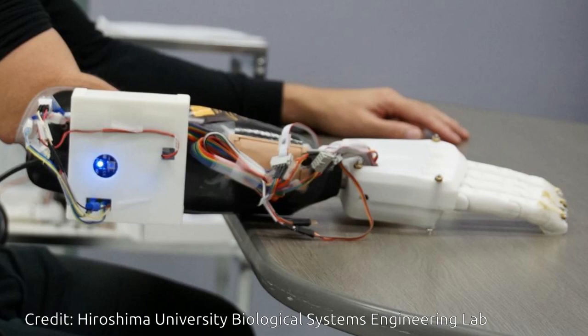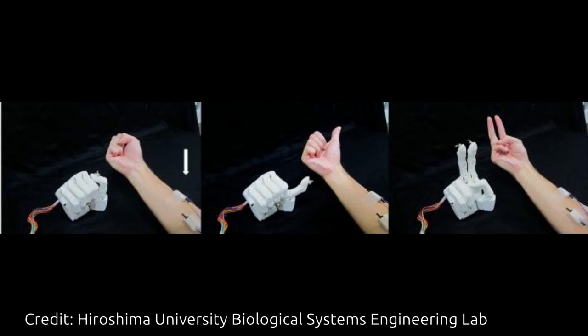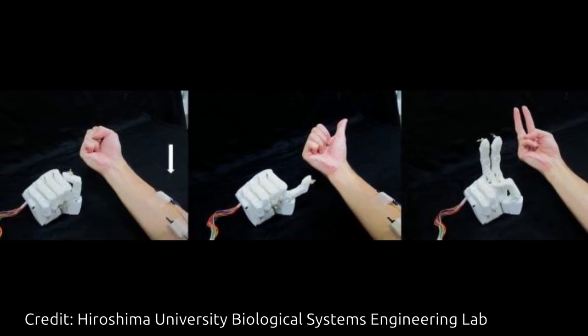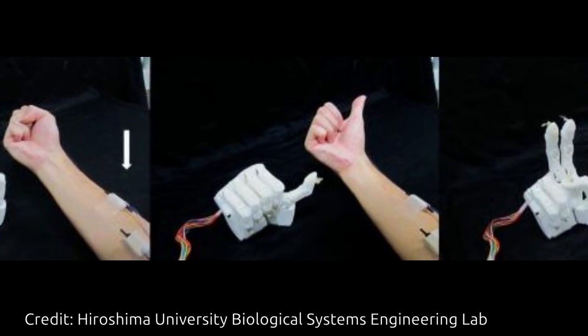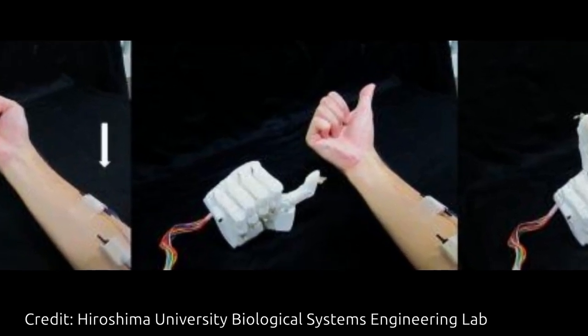The researcher describes the mechanism of this new hand and computer interface using a game of rock-paper-scissors. The wearer imagines a hand movement, such as making a fist for rock or a peace sign for scissors, and the computer, attached to the hand, combines the previously learned movements of all five fingers to make this motion.